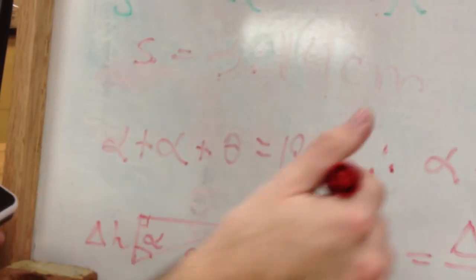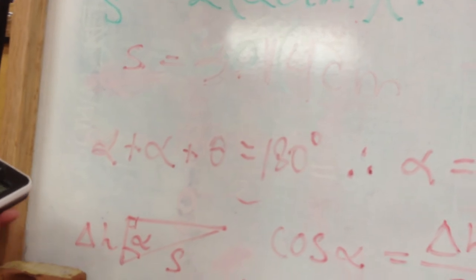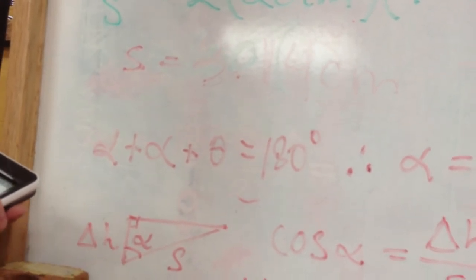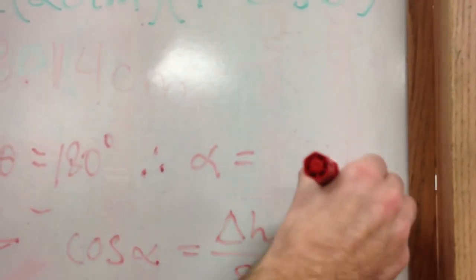Using that, we can figure out that alpha is now 180 minus 9 divided by 2 of them. We have 85.5.